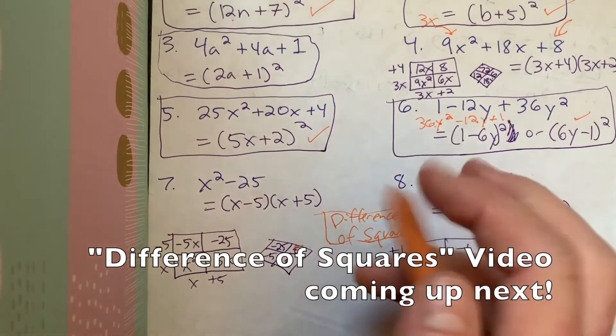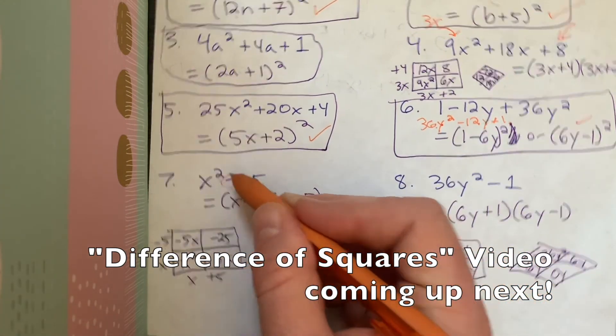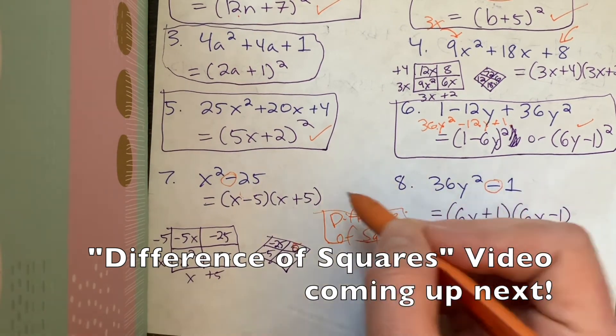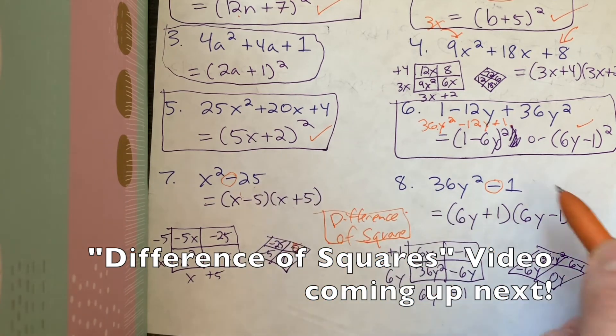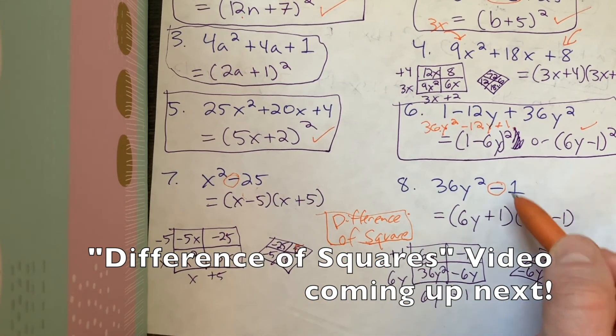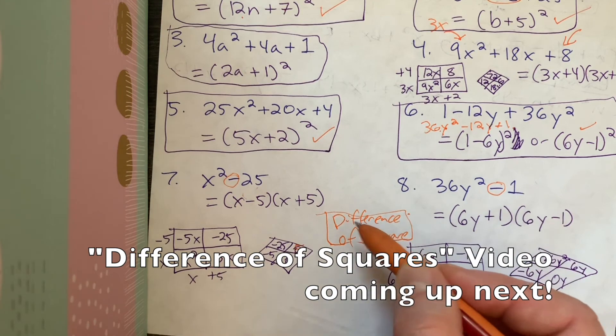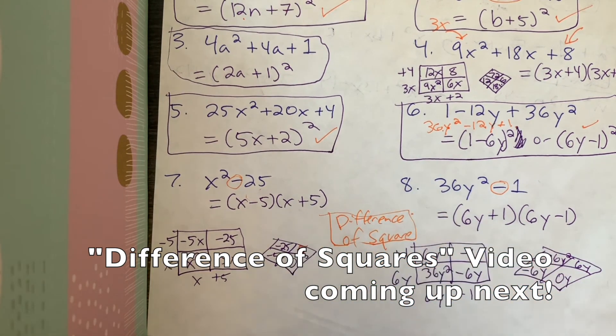These are not perfect squares. They are difference of squares because we have a subtraction sign between the perfect squares. X squared minus a perfect square here, 25. And y squared minus another perfect square here, 1. So difference of squares are these quadratics.